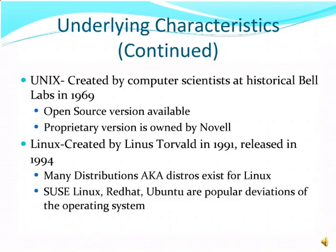Continuing our discussion regarding underlying characteristics of network operating systems. Unix was created by computer scientists at Bell Labs in 1969. An open source version is available, and the proprietary version is now owned by Novell. Linux was created by Linus Torvalds in 1991 and released worldwide in 1994. Many distributions of Linux are available — also known as distros — such as SUSE Linux developed by Novell, Red Hat, and Ubuntu. These are all popular variations of the Linux kernel.